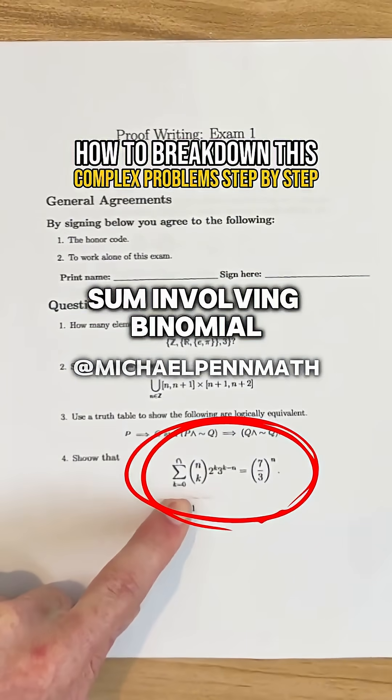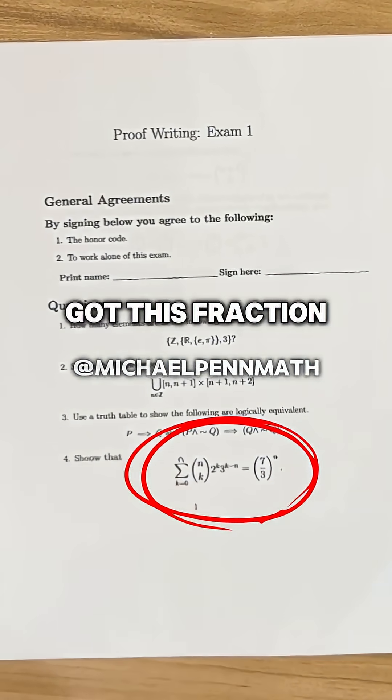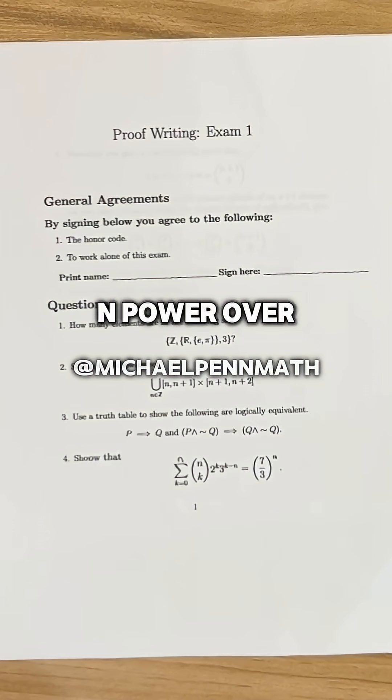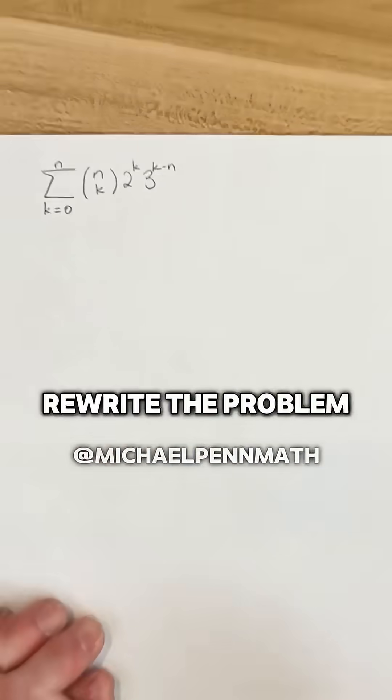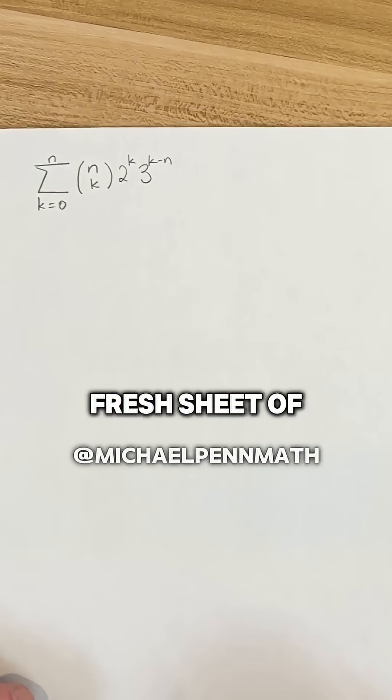We've got this sum involving binomial coefficients, and then we've got this fraction 7 thirds to the n power over here on the right hand side. Rewrite the problem so we have it on a fresh sheet of paper.